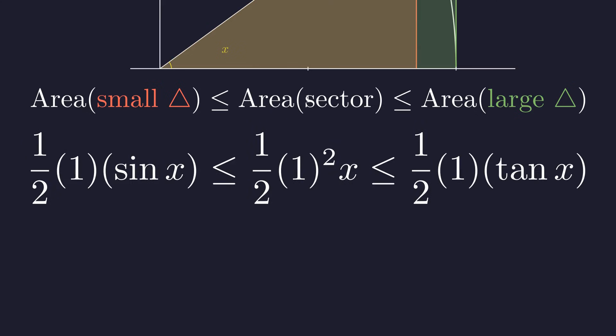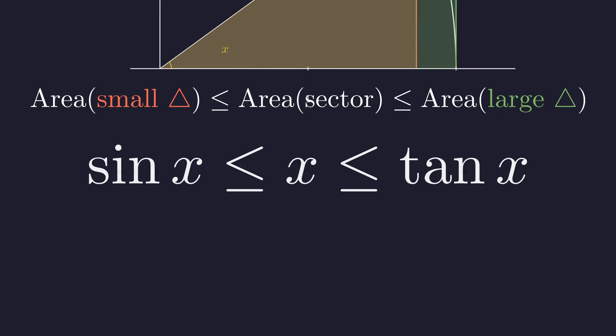Using the standard formulas: the area of the red triangle is one-half times base one times height sine of x. The sector's area is one-half r squared x. The green triangle's area is one-half times base one times height tangent of x. We can simplify this by multiplying the entire inequality by two, which leaves us with the core relationship: sine of x is less than or equal to x, which is less than or equal to tangent of x.